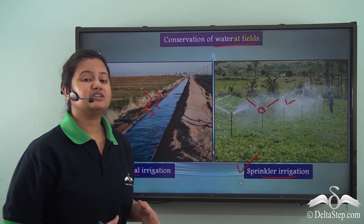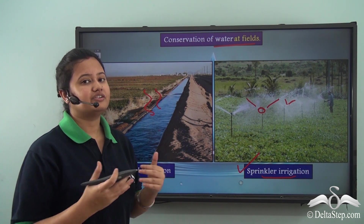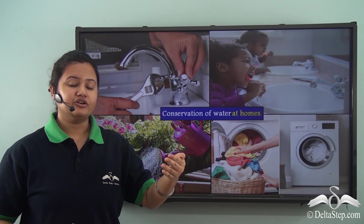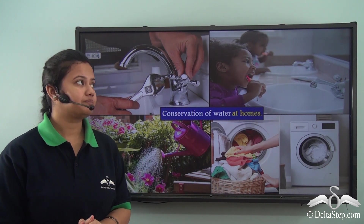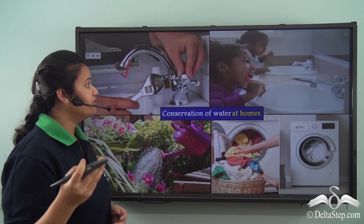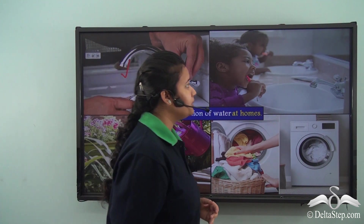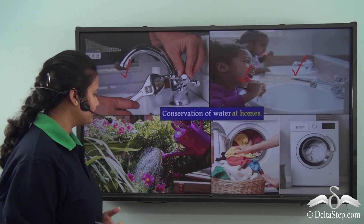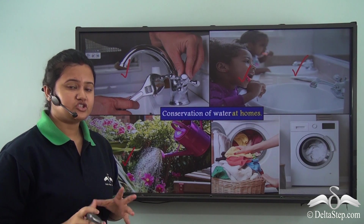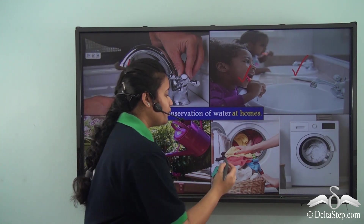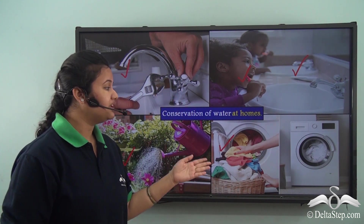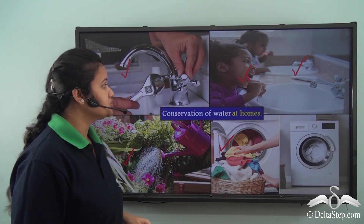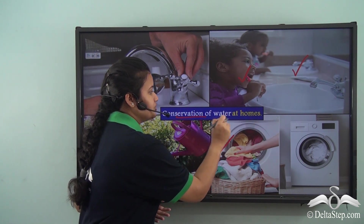To conserve water at fields, we must line the canals and switch to sprinkler irrigation. As individuals, we can also take small efforts: fix all leaking taps, faucets, or pipes; close the tap when not in use, especially while brushing teeth or applying soap; use water from washing vegetables for gardening; and run dishwashers and washing machines only when fully loaded.